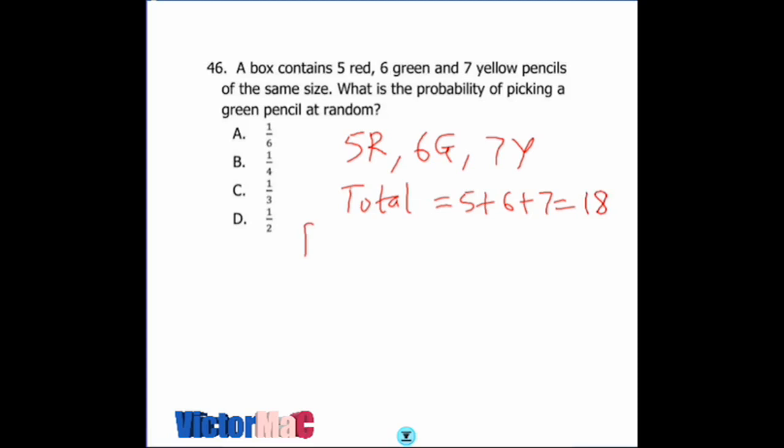By the formula for finding probability, we consider the probability of picking a green pencil. That's the number of required outcomes over total possible outcomes. Our desired outcome is to pick a green pencil, so any of the 6 can be selected out of the total of 18 pencils. 6 over 18 equals 1 over 3, so option C is the correct answer.